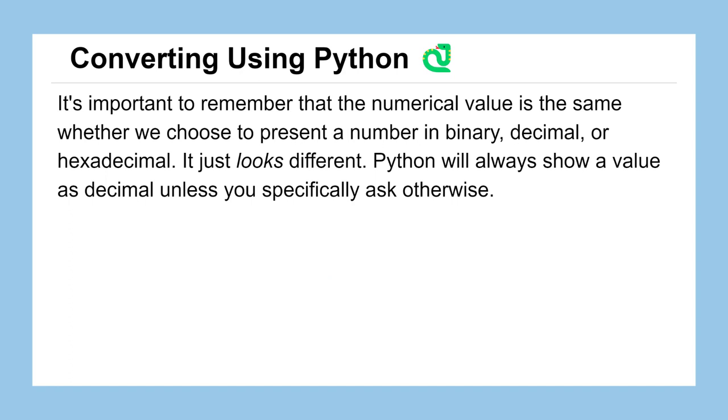Now, we can do all this paper, pencil, or handheld calculator, but it might be good to know how to do this in Python as well, so we can implement this into our computer code that we've been writing. Now, again, I've mentioned this before, but it's worth mentioning again. We're always talking about the same number. We're just looking at different ways of representing that number, decimal, octal, binary, whatever. It's the same number. It just looks different. We're writing it differently.